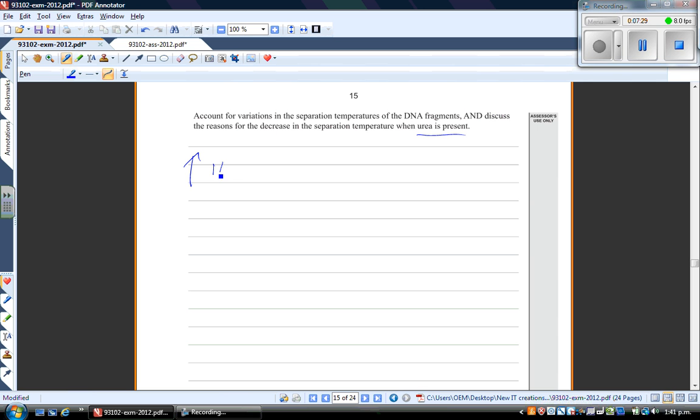So the variation in separation temperatures, we've mentioned this already. The more hydrogen bonding, the larger the temperature for separation. We found that. But also the larger the molecule, the higher the separation temperature.